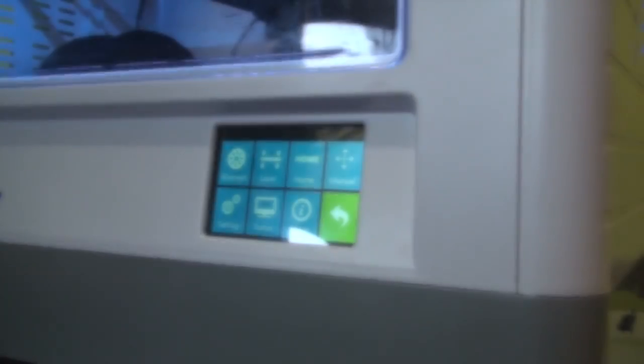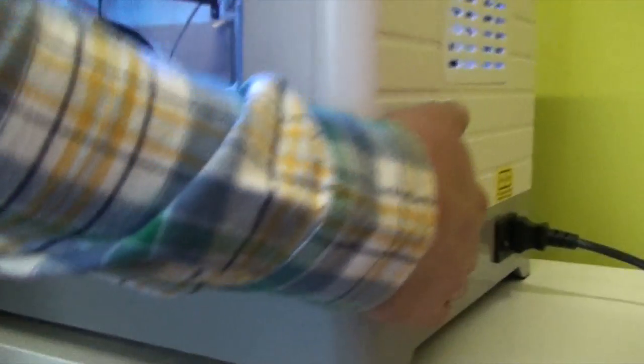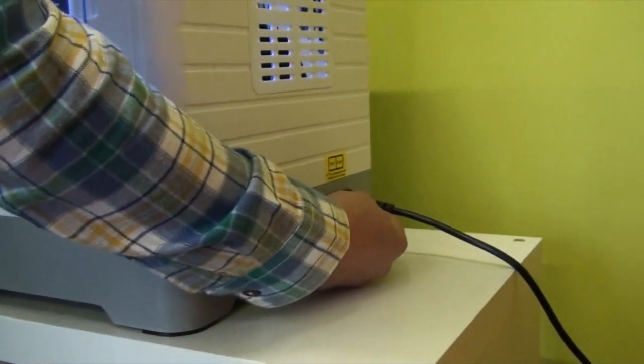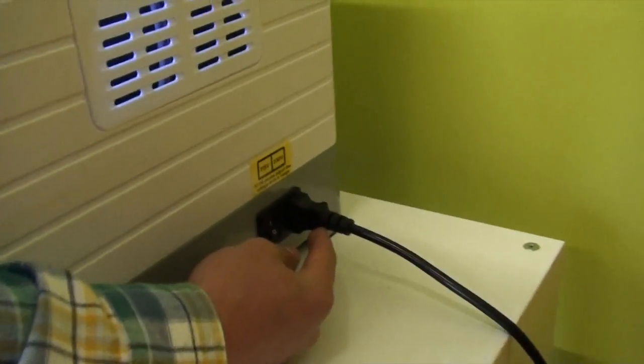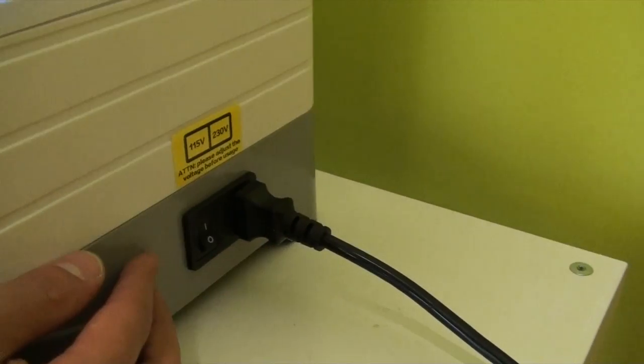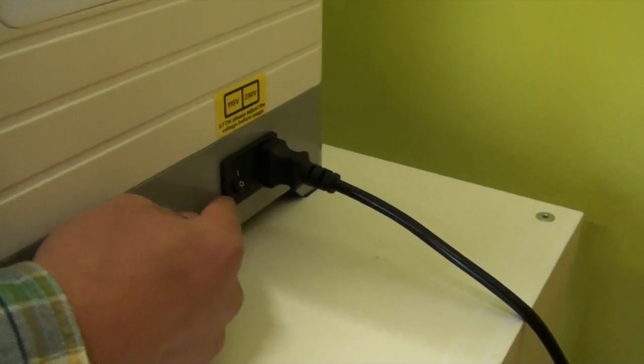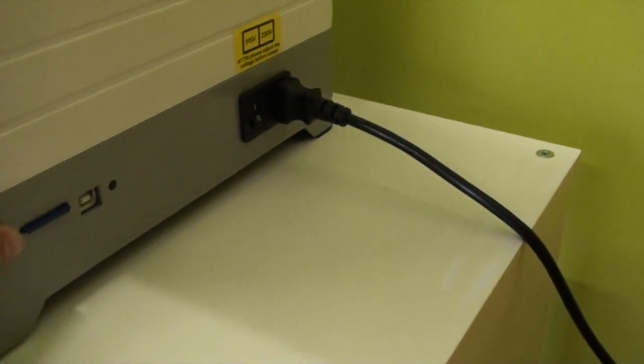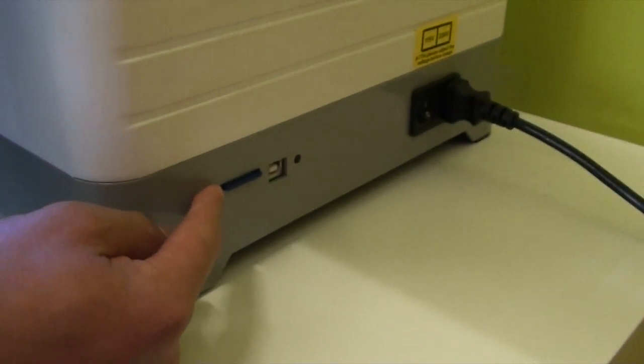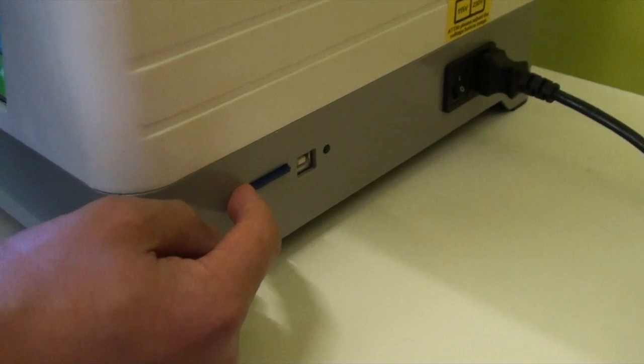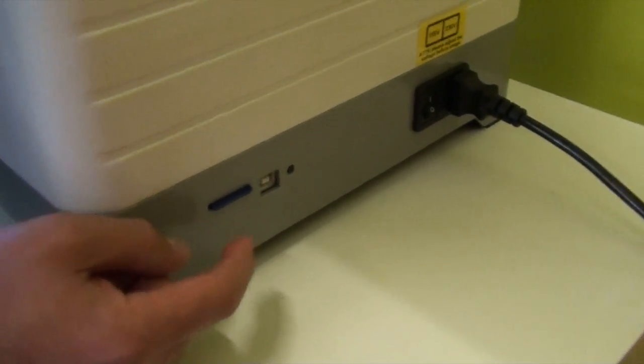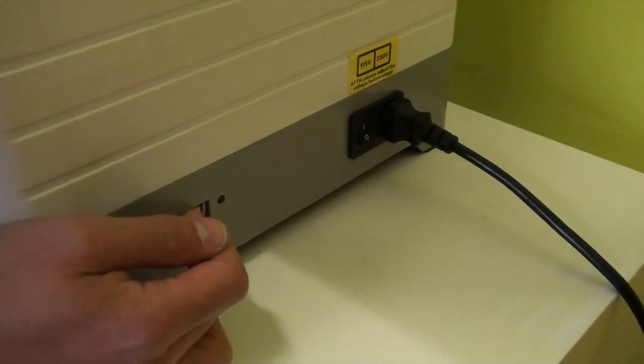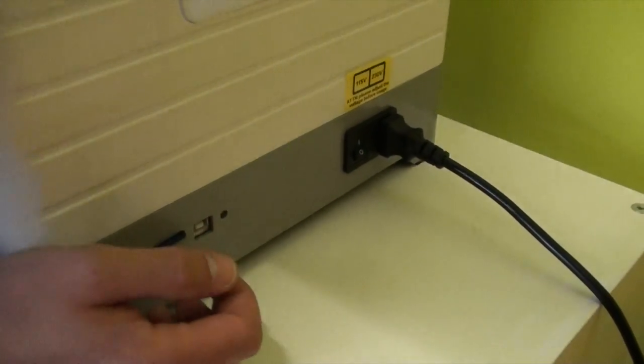If we take a look on the right hand side of the printer, you can see you've got the power connection there, which is plugged straight into the socket, and power switch. And then further towards the front, your SD card goes in there which you load your files on. Just insert that there. And you've also got a USB connection as well, which is just next to that.